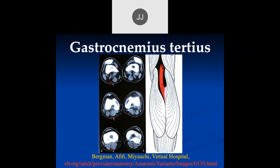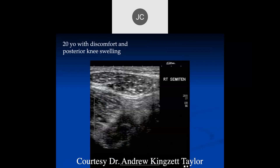There's another variant called the gastrocnemius tertius muscle — one of the more common muscle variants around the knee. Here we can see normal anatomy on the left side, and a gastrocnemius tertius tendon on the right side. There are actually two variants that can present in this same location. This is a 20-year-old with discomfort and posterior knee swelling, shown on ultrasound.